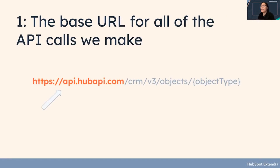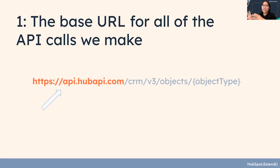The first thing we have is the base URL for all the API calls we're going to make. For HubSpot, that is https://api.hubapi.com. As a side note — if you ever get a suspicious email claiming to be from a company, check the base URL. If something doesn't match, that's a sign it's sketchy, so always verify URLs to avoid getting spammed.